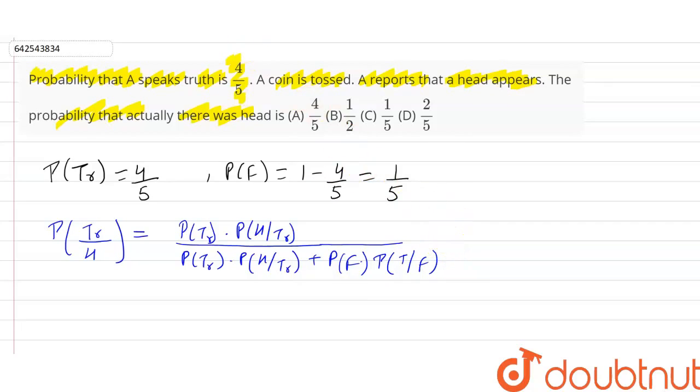So this is the formula by Bayes theorem. Let's put the values in it. Probability of truth is 4 upon 5 given in the question into probability of head is 1 upon 2 because in a coin there is only two outcomes head or tail, and probability of truth is 4 upon 5 into probability of head is 1 upon 2 plus probability of false is 1 upon 5 into probability of tails is 1 upon 2.